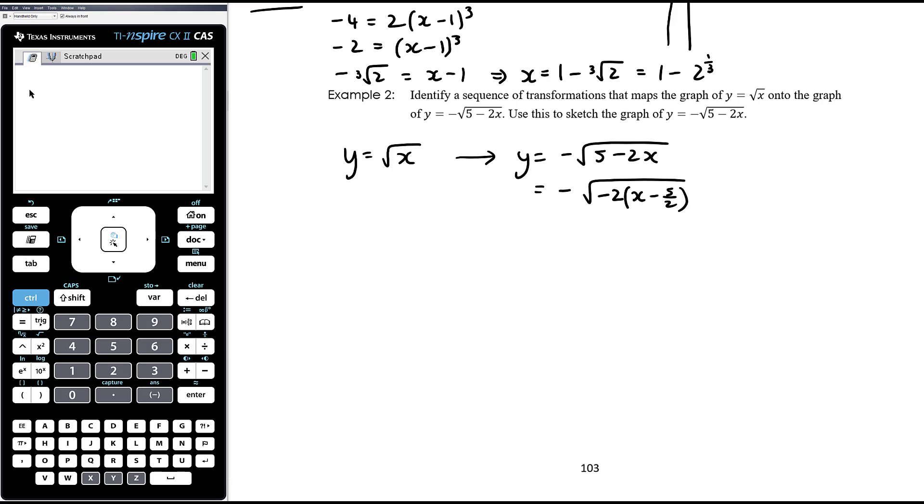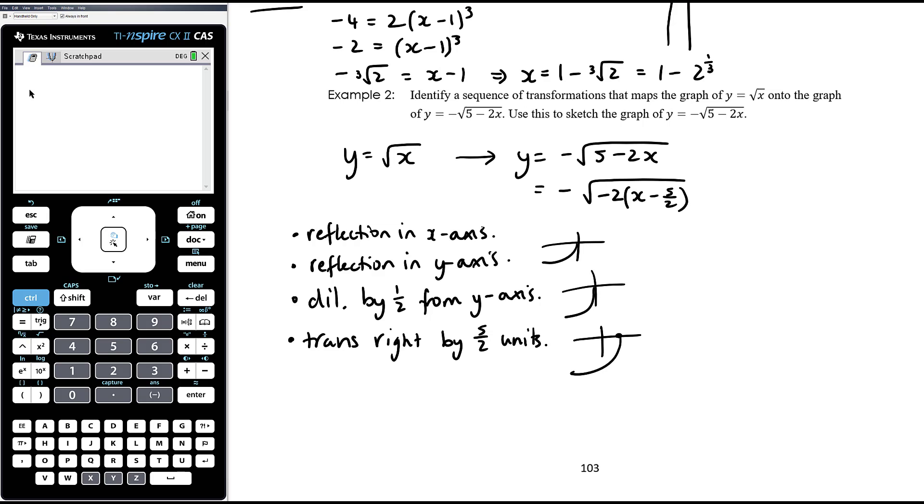So we're going to have reflection in the x-axis, which is that negative out the front, also reflection in the y-axis, which is the negative under the root. We've got a dilation by one half from the y-axis, and then we've got the minus 2 from the x, so that is translating in the function, subtracting is going to the right by 5 on 2 units. Reflection in the x and y-axis means the square root shape, reflecting in the x goes here, reflecting in the y goes here, so the shape is going to be this. We dilate it by half from the y-axis, so it's just going to be more stretched, and we translate it to the right by 5 on 2, means that that will be (5/2, 0), and we just need to work out the y-intercept.